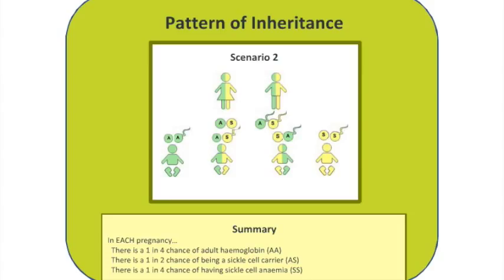So this time there's only a 1 in 4 chance of a healthy offspring with genotype AA, a 50-50 chance of any offspring being a carrier of the sickle cell trait, and a 1 in 4 chance of the child having sickle cell anaemia with genotype SS.